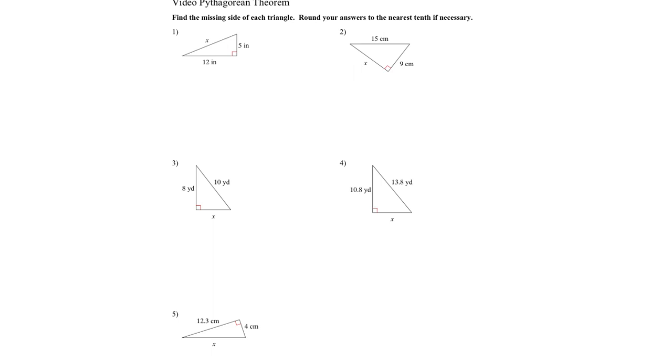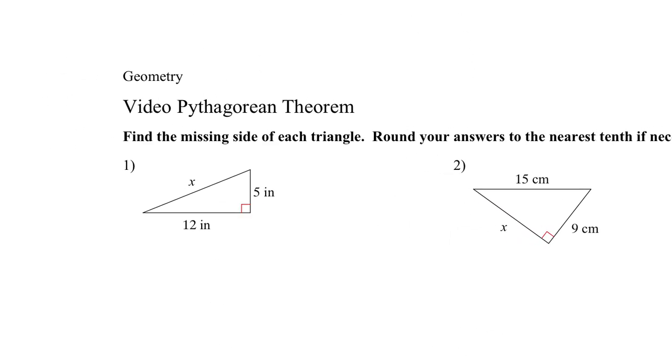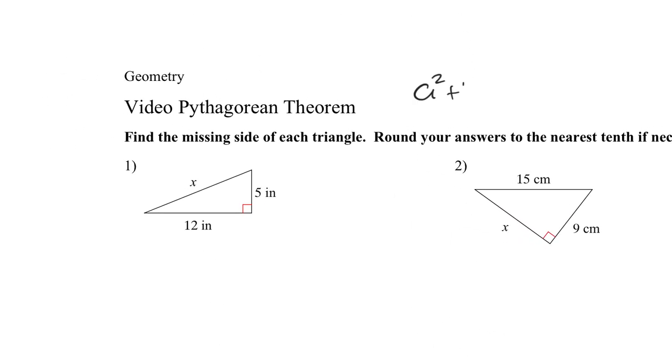In this video we're going to be working with the Pythagorean theorem. As a review and reminder, the Pythagorean theorem is A squared plus B squared equals C squared, where C is the hypotenuse. A and B are the legs, and C is the hypotenuse. Let's see a couple of examples here.